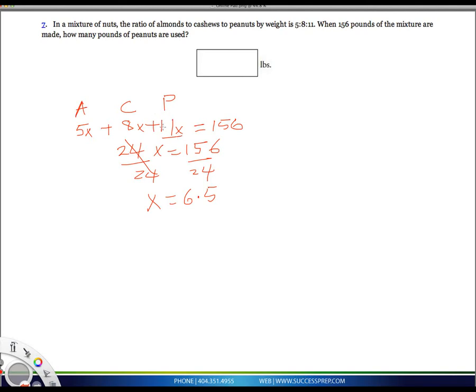Peanuts are 11X, so for the peanuts you say 11X, which is 11 times what we know X to be, which is 6.5.